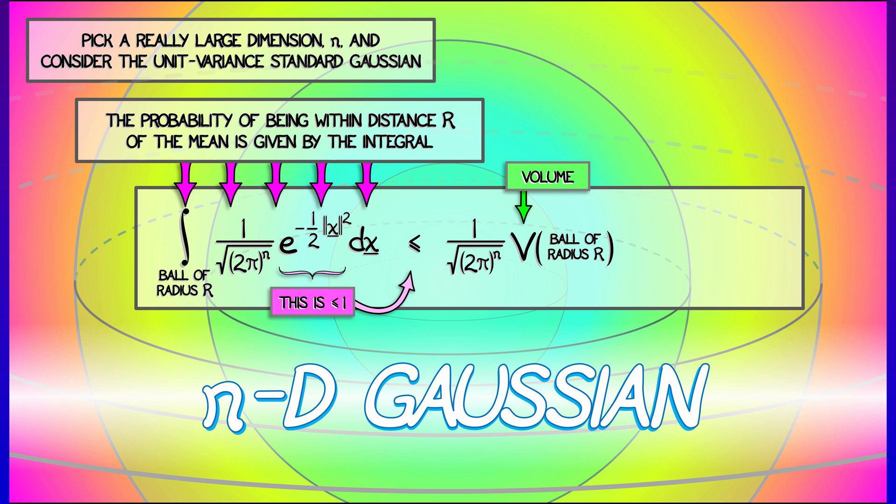That's the volume. Oh, but wait, we know the volume of a ball of radius capital R. We computed that, and hey, that had a two pi to the n over two in the numerator. So that cancels with this guy in the denominator, and with a little bit of simplification, we get an answer of capital R to the n divided by two to the n over two times gamma of n over two. That is quantity n over two minus one factorial.